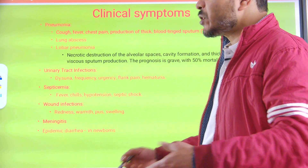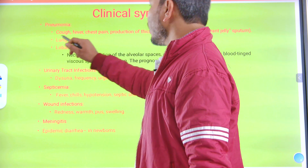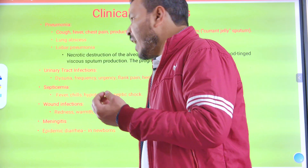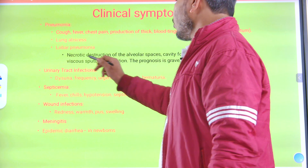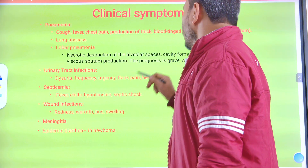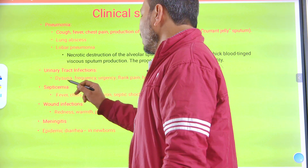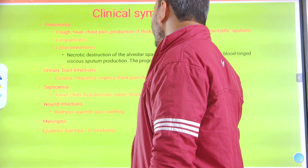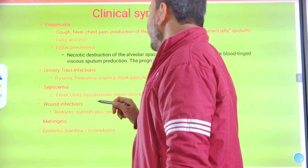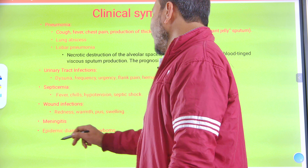Clinical symptoms: In pneumonia — cough, fever, chest pain, production of thick blood-tinged (currant-jelly) sputum, lung abscess, lobar pneumonia involving different lobes, necrotic destruction of alveolar spaces, cavity formation. Prognosis is grave with up to 50% mortality. In urinary tract infections — dysuria, frequency, urgency, flank pain, and hematuria (blood in urine). In septicemia — fever, chills, hypotension, and septic shock. In wound infections — redness, warmth, and swelling. In neonates — meningitis and epidemic diarrhea in newborns.